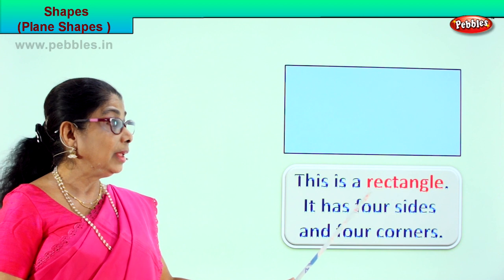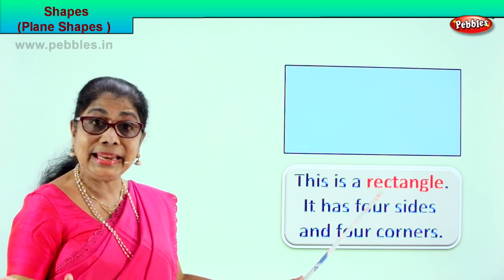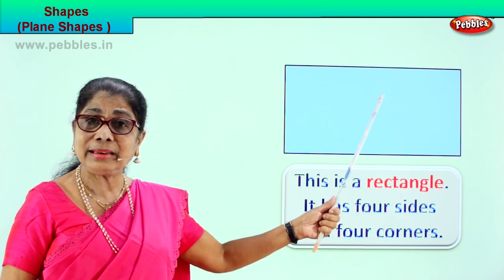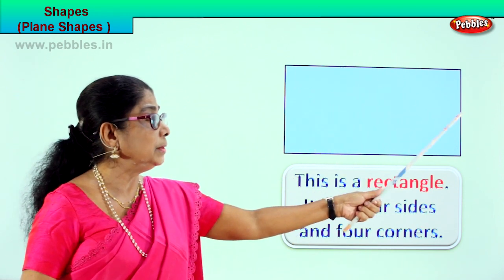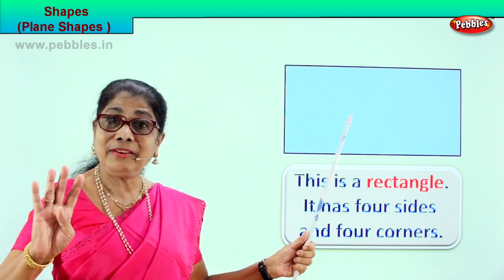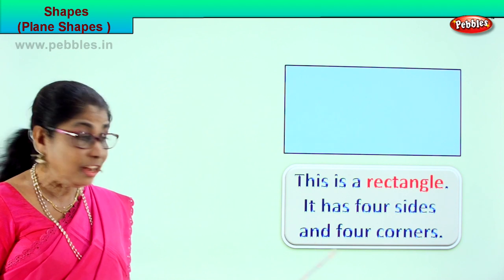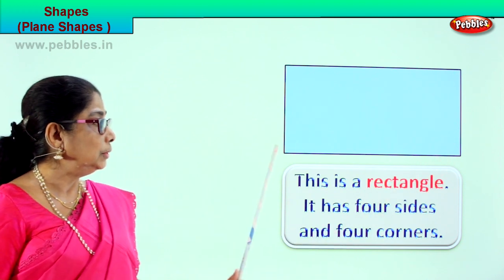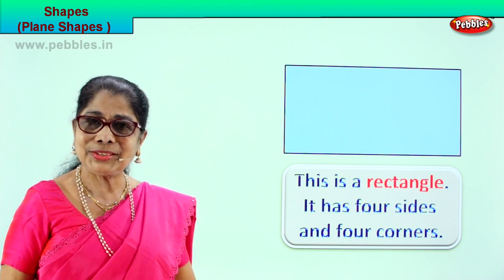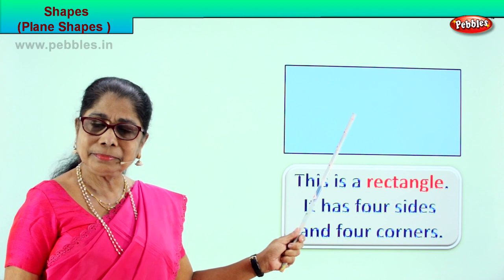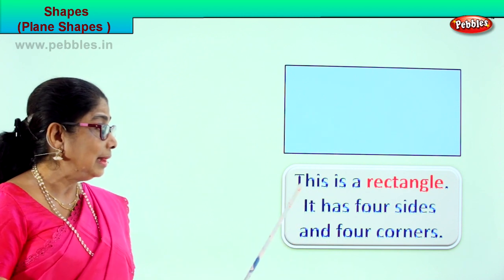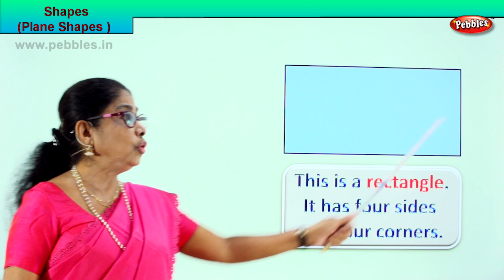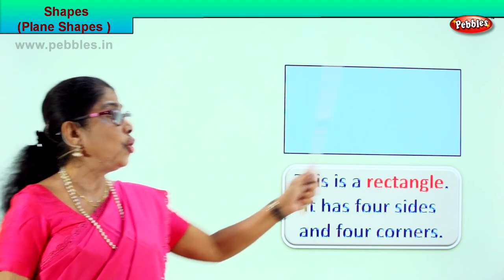Now let's see — not only rectangle, but what does it have? It has four sides. How many sides does a rectangle have? Four sides: one, two, three, four. A rectangle has four sides and four corners. Let's count: one, two, three, four. A rectangle has four sides and four corners.